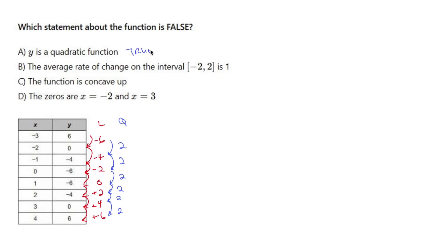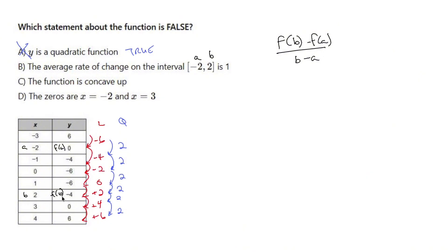This is a true statement, but I want the false one, so I don't want A. The average rate of change on the interval negative two to two is one. The average rate of change formula is f(b) minus f(a) over b minus a, where a and b are the interval endpoints. So f(b) is negative 4, minus f(a) which is zero, over b which is 2, minus negative 2 — and negative 4 over 4 is negative 1.